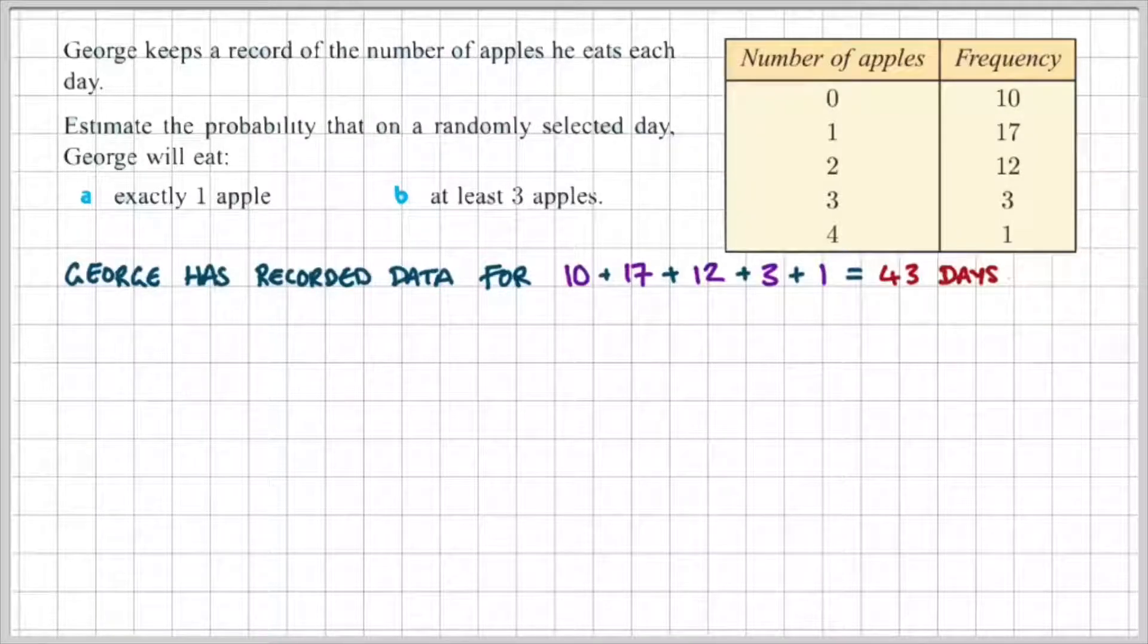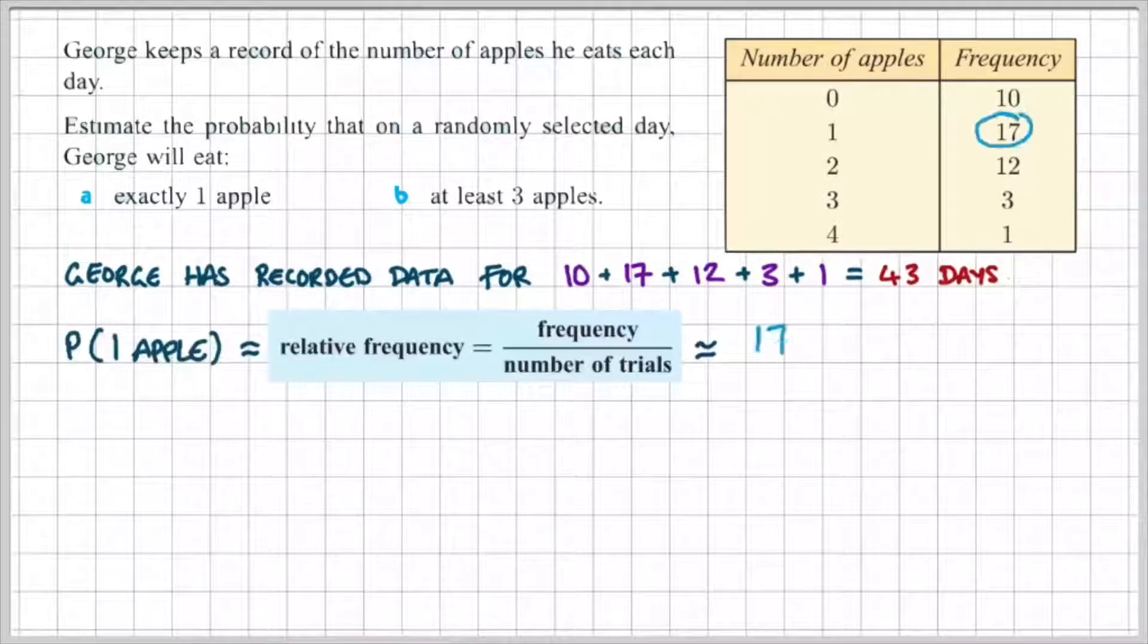We can see from the table that George has recorded data for 43 days. And that is 10 plus 17 plus 12 plus 3 plus 1 days altogether. Now, in order to find the probability that George is going to eat exactly one apple, we're going to use relative frequency.